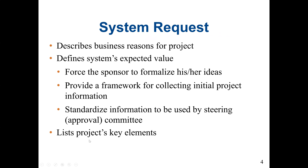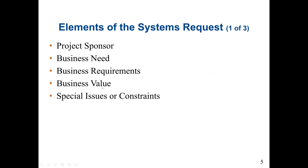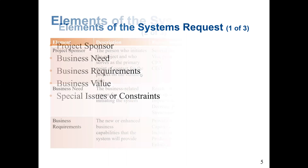We are going to list the key elements in the system request document. These elements are: the project sponsor, the business needs, the business requirements, the business value, and special issues or constraints. Now let's go through each element.